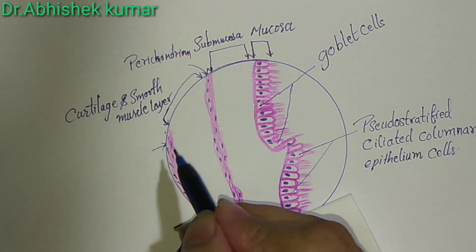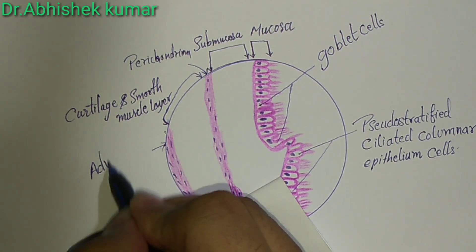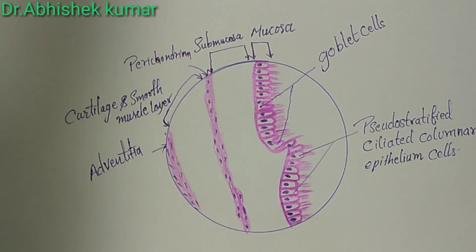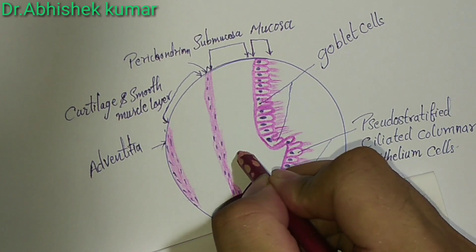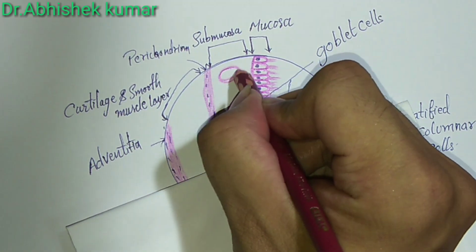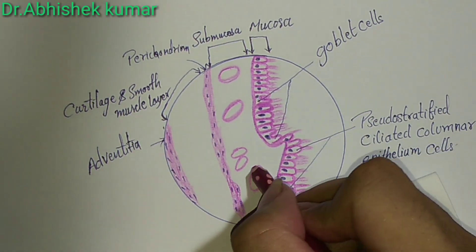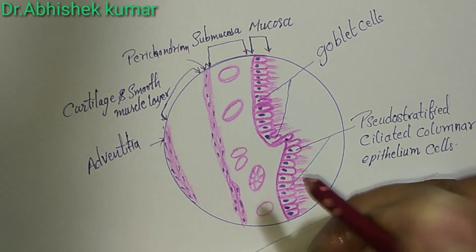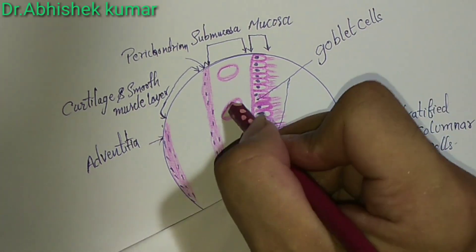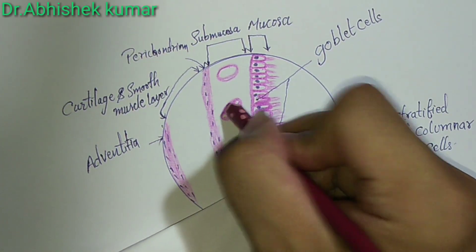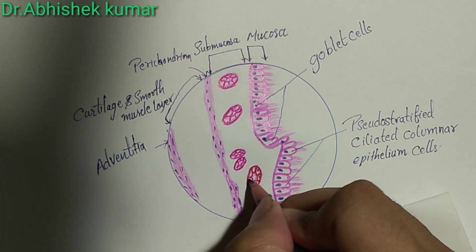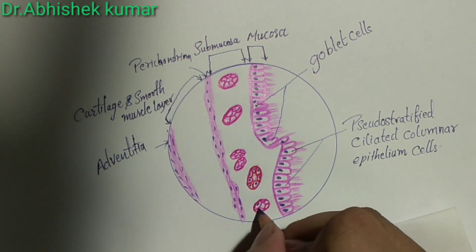The final layer is called adventitia, which consists of collagen fibers. In the submucosa layer, we see many glands are present — round structures. It consists of many glands, connective tissues, and blood vessels. Basically in the submucosa we draw the glands. Two glands are present: serous gland and mucous gland.